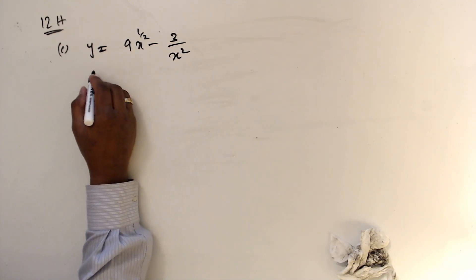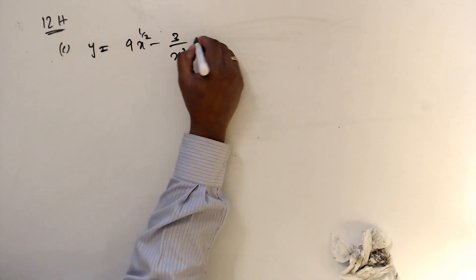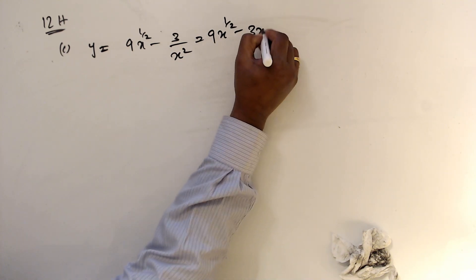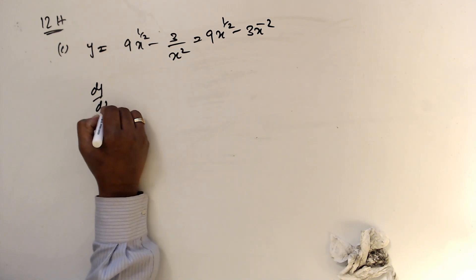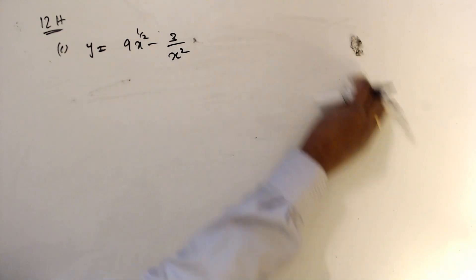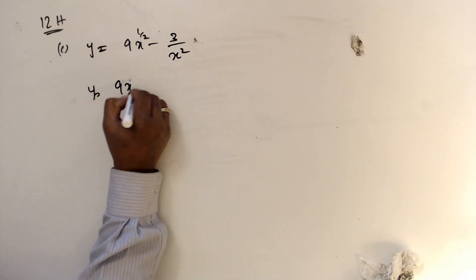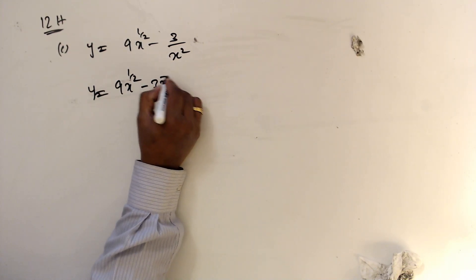I will bring it down here. y equals 4x squared then 9x to the half minus 3x to the minus 2.